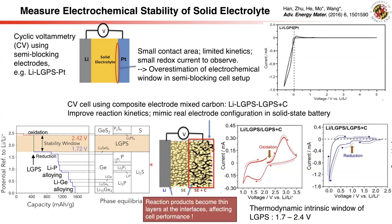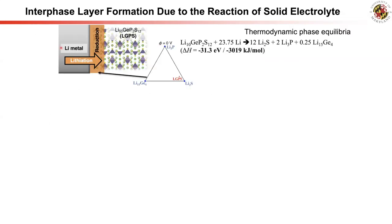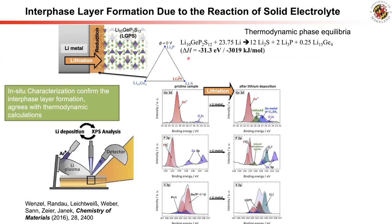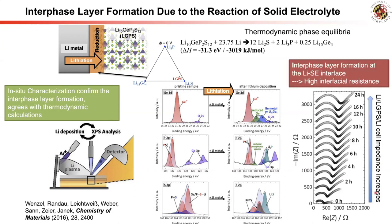More importantly, the reactions of solid electrolytes lead to the formation of an interface layer, which greatly affects solid-state battery performance. For the interface between ALGPS and lithium metal, the thermodynamic phase equilibria gives lithium sulfide, lithium phosphide, and lithium-germanium alloy as the lowest energy phases, and the lithiation of ALGPS is a highly favorable reaction. These reactions are confirmed by in-situ XPS characterizations by Professor Anik's group, who observe reduced germanium, lithium phosphide, and lithium sulfide formation at the interface. Correspondingly, the interfacial resistance grows significantly as a result of these interface layers.